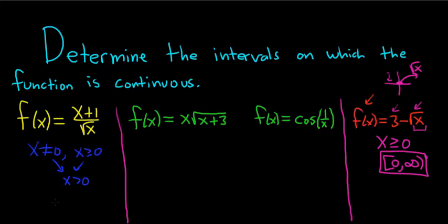So putting both of these conditions together gives you x greater than 0. So in this case, the domain would be 0 to infinity. That would be the domain of the function, and that would be where it's continuous. So it's continuous everywhere it's defined.